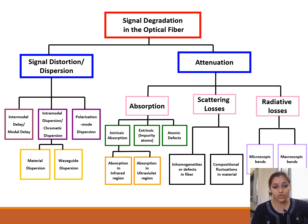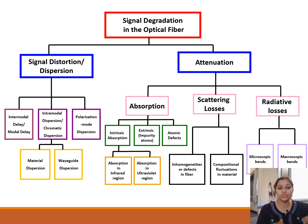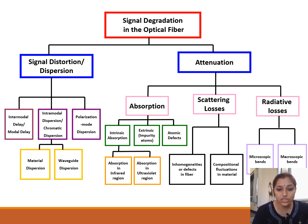Signal dispersion or distortion is further divided into three types: intermodal delay, intramodal delay, and polarization mode dispersion. Intermodal means when two modes are traveling simultaneously — because of dispersion they will get merged. Intramodal means dispersion or distortion within a single mode. Intramodal dispersion occurs because of material dispersion and waveguide dispersion.